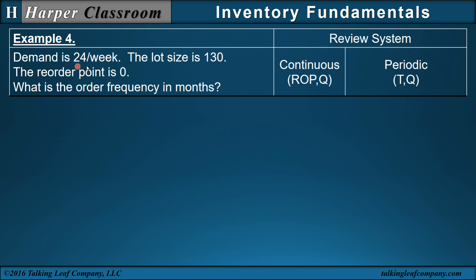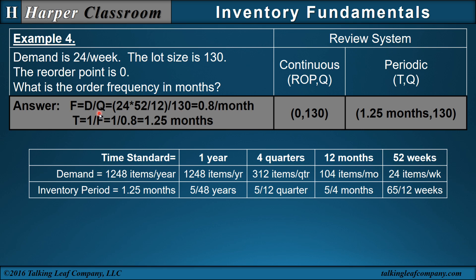Example 4: My demand is 24 items per week, my lot size is 130, and the ROP is 0. What's the order frequency in months? My frequency is D over Q. Since I want my frequency in months and my demand is in weeks, I transform weeks to months by going from weeks to years — multiply by 52 — then years back to months — divide by 12. Divide that by my 130, and there's my frequency of 0.8 months. My inventory period is the reciprocal of my frequency: 1 over 0.8 is 1.25 months. And there's my inventory policy.